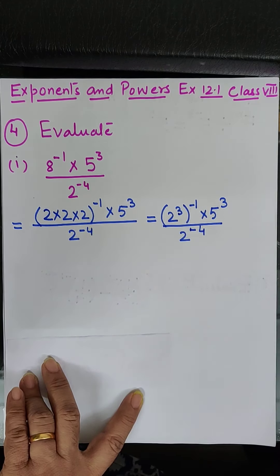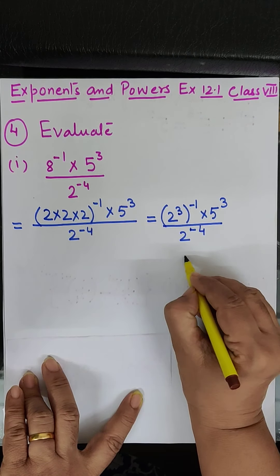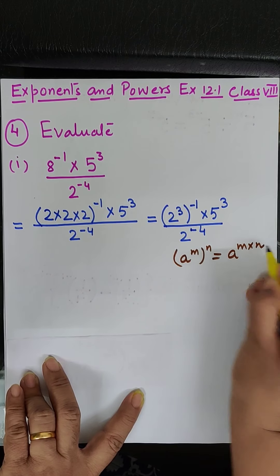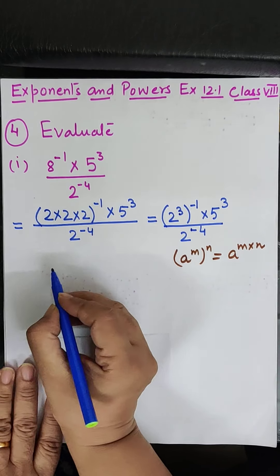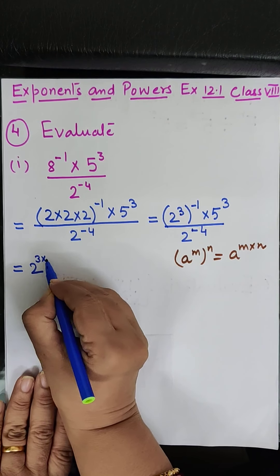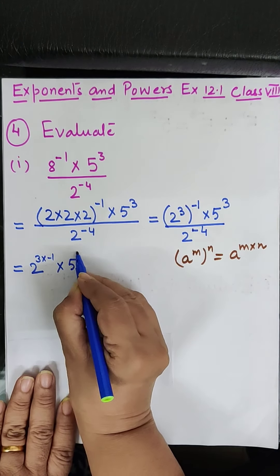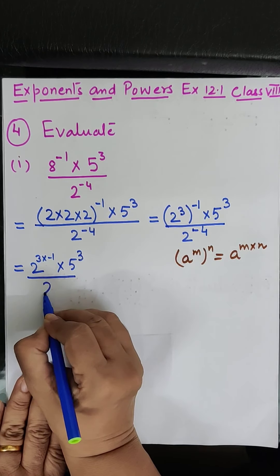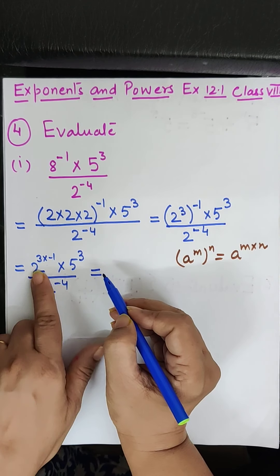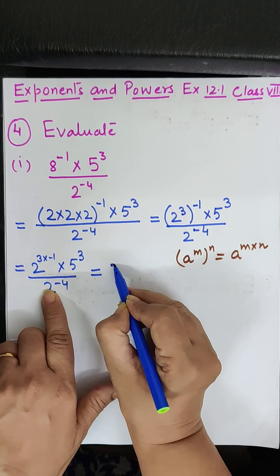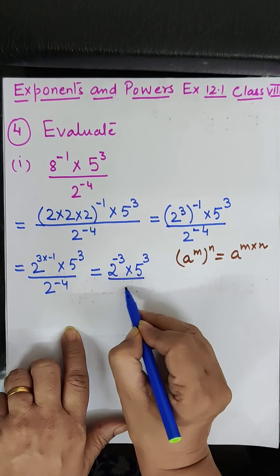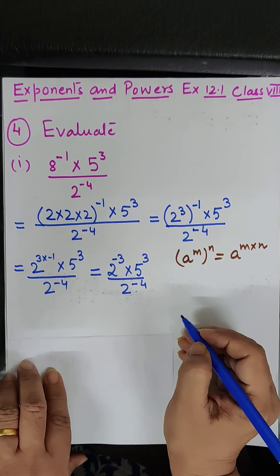We can write this as 2 to the power 3 into minus 1, into 5 to the power 3, upon 2 to the power minus 4. Applying the power of a power rule, this becomes 2 to the power minus 3, into 5 to the power 3, upon 2 to the power minus 4.